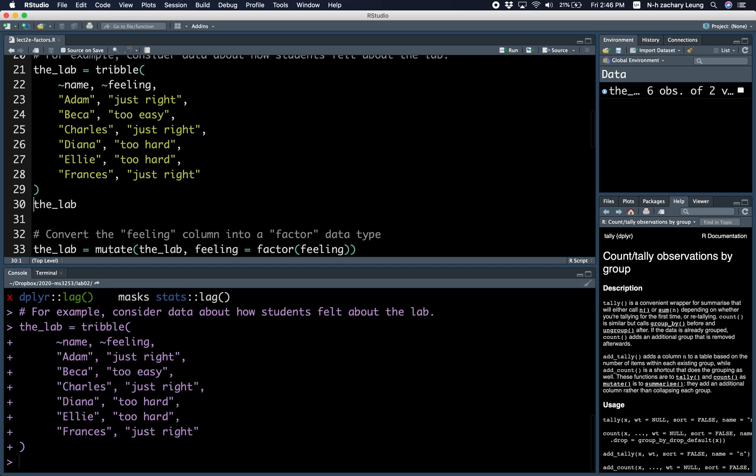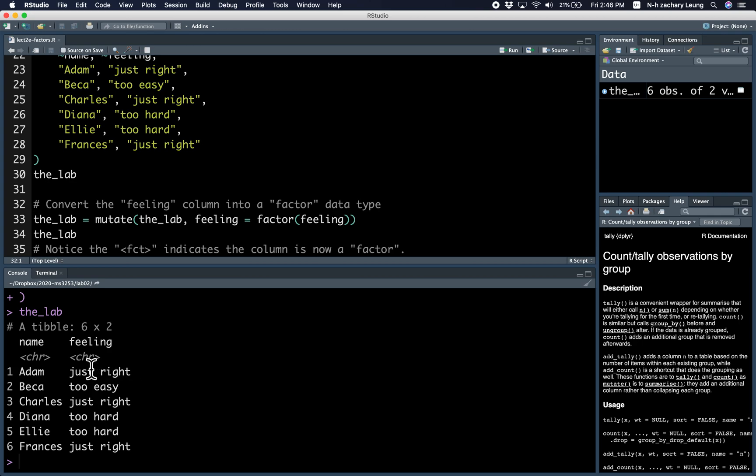This is the data where we have six students and their feelings. So initially, the feeling column is character, as you can see here.